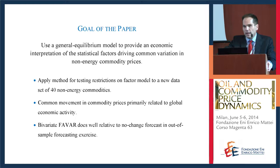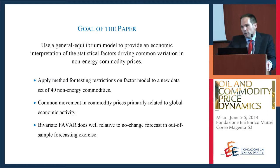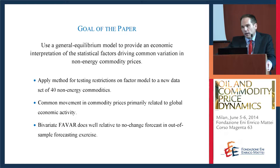We find that the common movement — the first principal component — is primarily related to global economic activity. We then look at the ability of this first principal component to forecast the prices of individual commodities as well as several widely used commodity price indices in an out-of-sample forecasting exercise. We find meaningful improvements in forecast accuracy using this simple factor-augmented VAR relative to a no-change forecast.